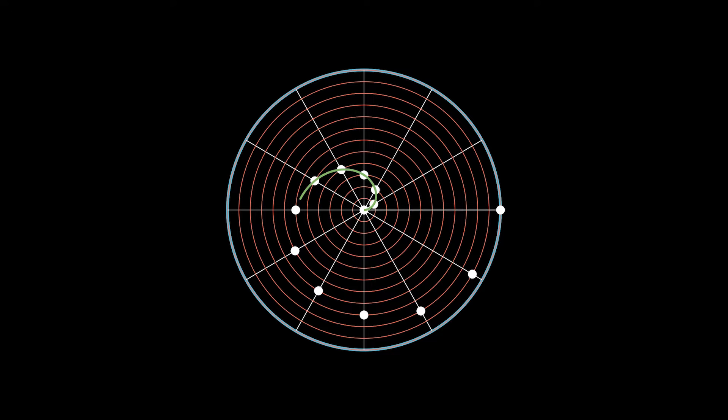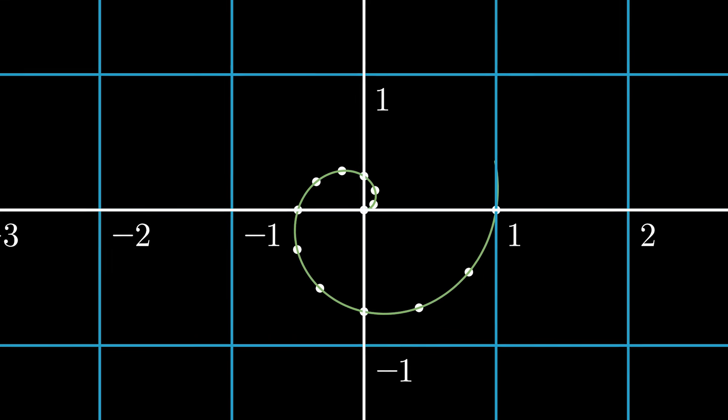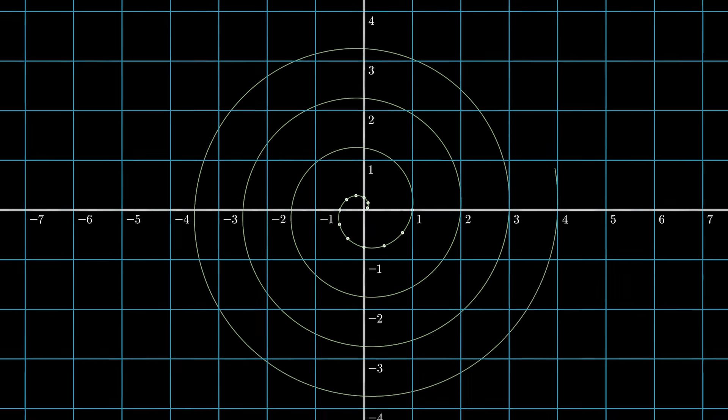And then you draw a spiral that goes along these coordinate points. And once you parametrize this, you can put this on a Cartesian plane and keep spiraling around forever and ever and ever.